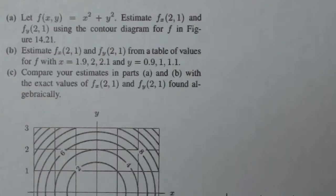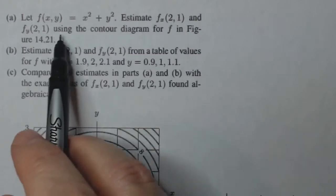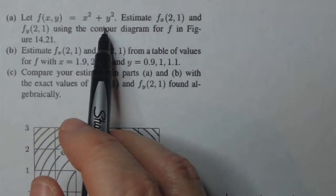There's a problem regarding estimating partial derivatives at a point using contours and a table, and then finding the actual values because we are given the original equation. So our original equation is f of xy equals x squared plus y squared.